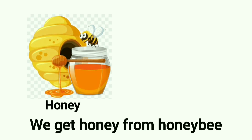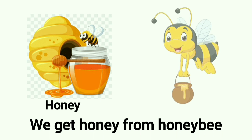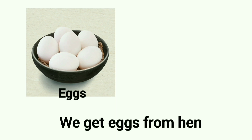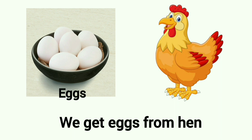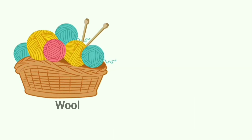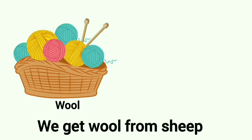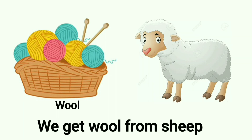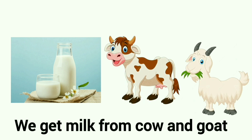Honey. We get honey from honeybee. Eggs. We get eggs from hen. Wool. We get wool from sheep. Milk. We get milk from cow and goat.